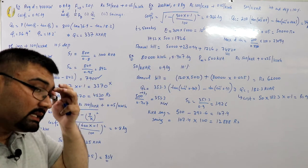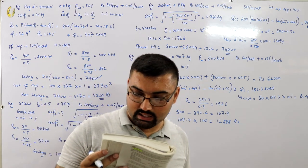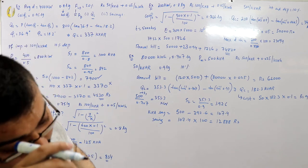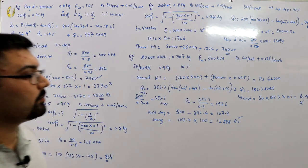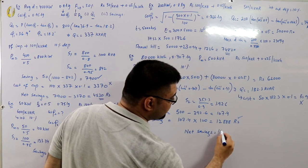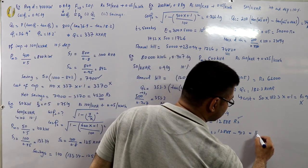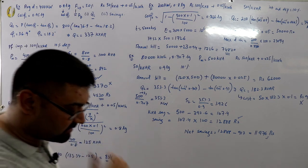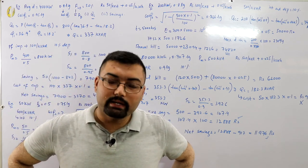The units consumed are the same before and after power factor correction, so the energy cost remains unchanged. Net saving = savings from kVA reduction − cost of phase advancing equipment = 12,888 − 912 = 11,976 rupees annually. That is the amount of money saved per year.